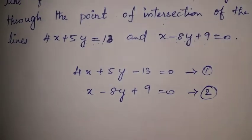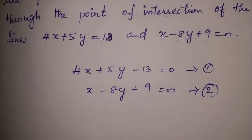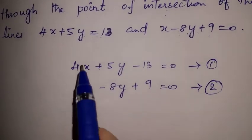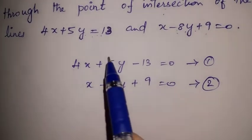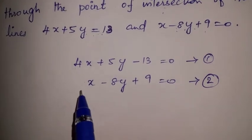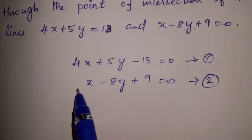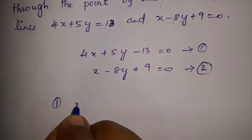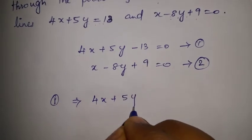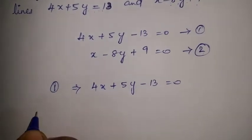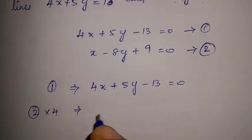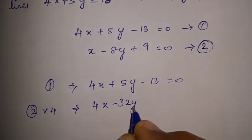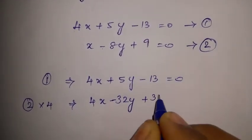Now to solve it, we use the elimination method. The x variable coefficients need to be made the same. We take the first equation as it is: 4x plus 5y minus 13 equal to 0. For the second equation, we multiply by 4 throughout: 4 into x gives 4x, 4 into 8 gives 32y, so minus 32y, and 4 into 9 gives 36, so plus 36, equal to 0.